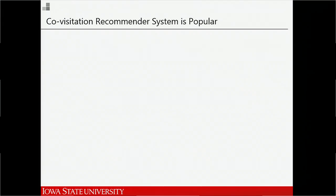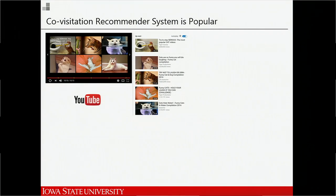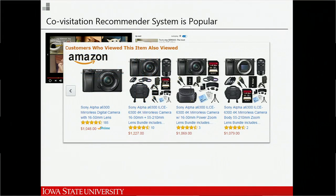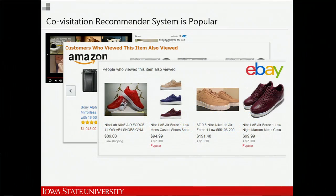A little bit of background about recommender systems. We use them every day and see them on many different popular websites. For example, a covisitation recommender system is a specific type of recommender system that makes recommendations based on covisitation between items. On YouTube, after you finish watching a video, YouTube will show you a list of related videos to watch next. All these recommended videos are videos viewed together in the past with the video you just clicked. For example, if I clicked a funny cat video, it shows me a list of other funny cat videos. This type of covisitation-based recommender system is very popular. Amazon also provides a very similar feature called 'Customers Who Viewed This Item Also Viewed,' and the same feature is provided by eBay.